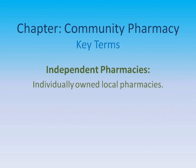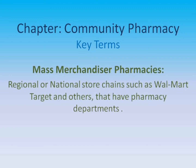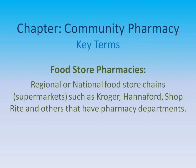Independent Pharmacies: Individually owned, local pharmacies. Chain Pharmacies: Regional or national pharmacy chains such as CVS, Walgreens, Rite Aid, and others. Mass Merchandiser Pharmacies: Regional or national store chains such as Walmart, Target, and others that have pharmacy departments. Food Store Pharmacies: Regional or national food store or supermarket chains such as Kroger, Hannaford, ShopRite, and others that have pharmacy departments.